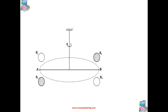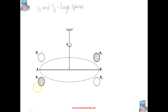The apparatus used by Cavendish is schematically shown in this figure. S1 and S2 are large spheres which are kept on either side, shown in the shaded portions. These S1 and S2 large spheres are kept on either side of the masses at A and B.